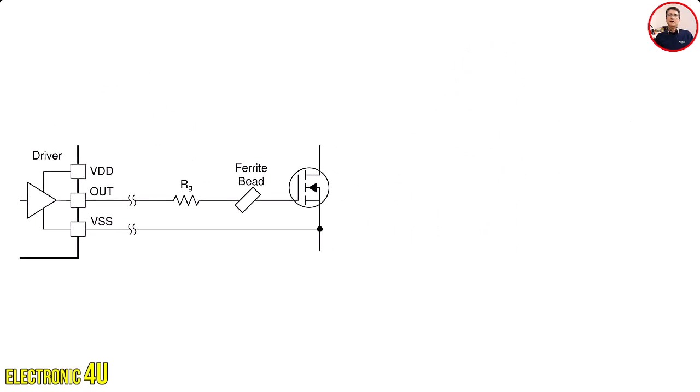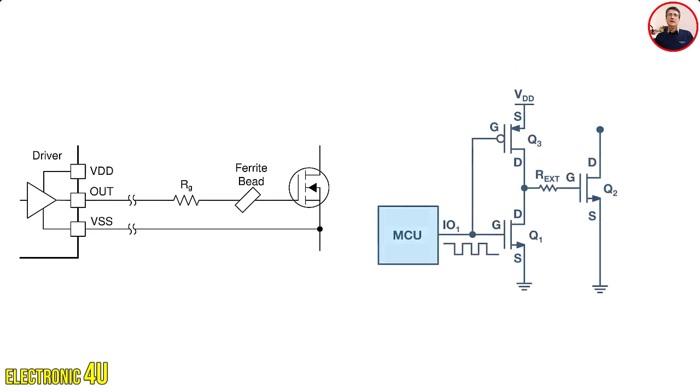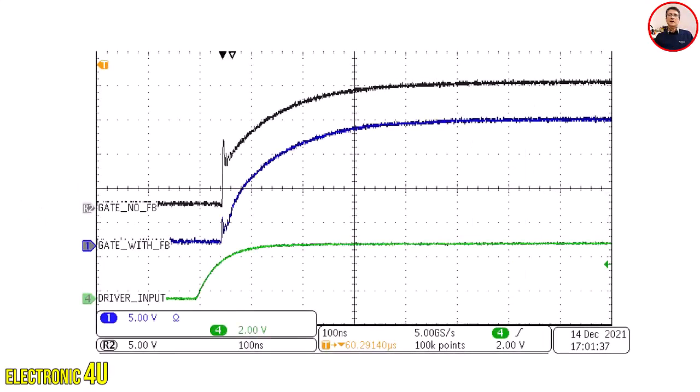It is clear ferrite beads can reduce the noise in a system, but there can be trade-offs. A common concern with adding components to gate drive paths is reduced switching speed, which leads to reduced efficiency. This picture shows the rising gate signal of a superjunction MOSFET switching both with in blue and without in black a ferrite bead. Looking at the two waveforms, the ferrite bead has minimal effect on normal operation.